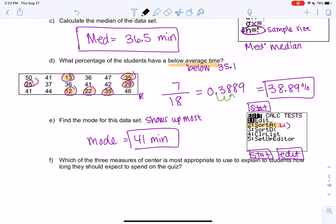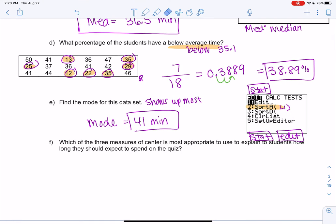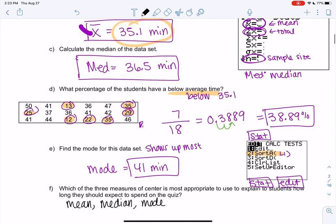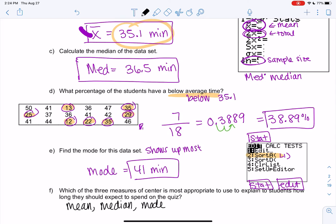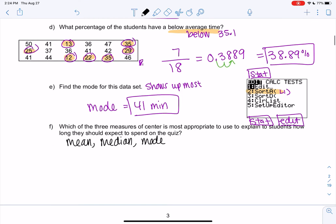So let's just compare the three measures of center. So the three measures of center are mean, median, and mode. And then we're just curious which is the most appropriate to describe to someone how long they should expect to spend on the quiz. So you're a student in the class, right? There's three different numbers, right? How long is it going to take you to do the quiz? So 35.1, 36, or 41, right? So let's talk about them.